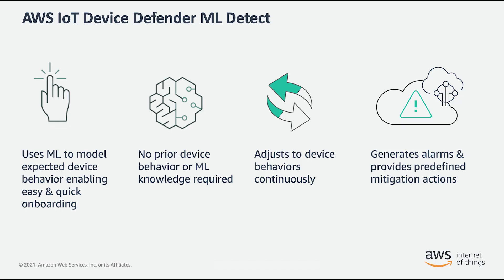With ML Detect, AWS brings machine learning to IoT security, using machine learning to learn normal device behavior and detect device anomalies. ML Detect is an enhancement over rule-based anomaly detection.